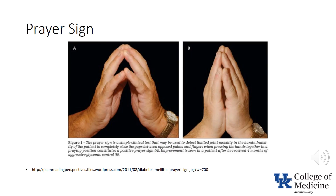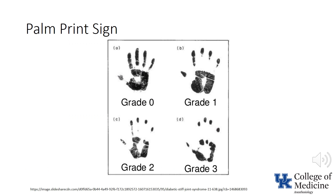Some improvement in joint mobility over time may be achieved with tight glycemic control. Another screening test is termed the palm print sign. Ink is applied to the hands and the patient is instructed to press his or her hands onto a piece of paper. In grade 1, all phalangeal areas are visible. In grade 2, you cannot see the interphalangeal areas of the 4th and 5th fingers. In grade 3, you cannot see the interphalangeal areas of the 2nd to 5th fingers. In grade 4, only the fingertips are seen.